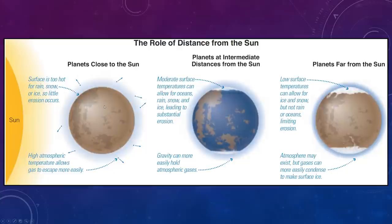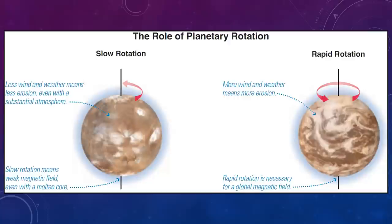When you talk about distance from the Sun, we also mentioned that at the surface, the Sun does affect the temperature. If you're close to the Sun, the surface is too hot for rain, snow, or ices to occur, and it allows gases to escape more easily, so the atmospheres are probably more thin, if at all. Planets at intermediate distances from the Sun, like our own Earth, we have everything in moderation. And then planets far away are cooler at the surface, so it can allow for ices and snows to form. That limits erosion, because you won't have any liquid precipitation. Atmospheres could exist as well, but they more easily condense to form ices. And we'll see that when we talk about Mars later on, what carbon dioxide does in the atmosphere.